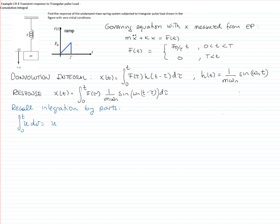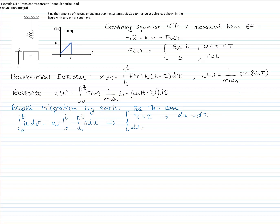Recall that the integration by parts formula is: the integral from zero to t of u·dv equals u·v evaluated at the limits of integration minus the integral of v·du. In this case, we set u equals tau, so du equals d-tau. And dv equals sine of omega_n·(t minus tau) d-tau, so integrating gives v equals negative cosine of omega_n·(t minus tau) divided by omega_n — negative because tau appears with a negative sign.